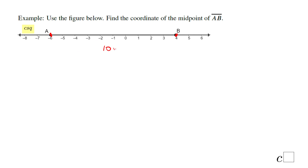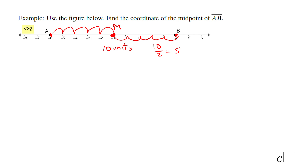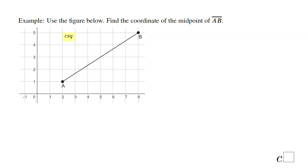Halfway means 10 divided by 2, which is 5. So 5 units away from A — counting 1, 2, 3, 4, 5 — that is midpoint M. You'll notice this point M is also 5 units away from B. That's what I meant by using your graphing skill.